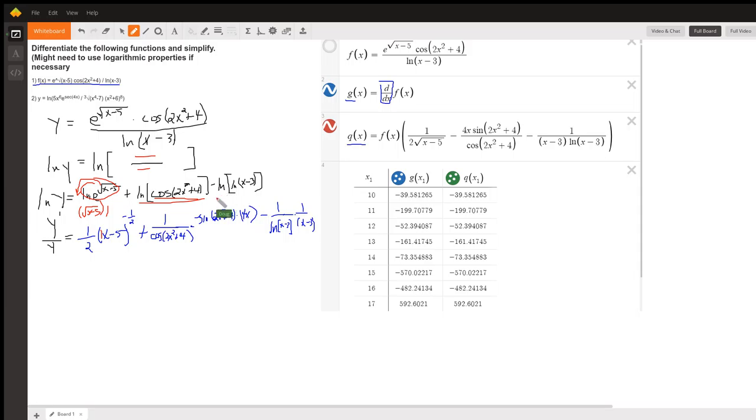The derivative of this term, I have 1 over the derivative of the inside times the derivative of the inside. Well, the derivative of natural log of x minus 3 is 1 over x minus 3 times the derivative of x minus 3 using a chain rule would also be a 1.